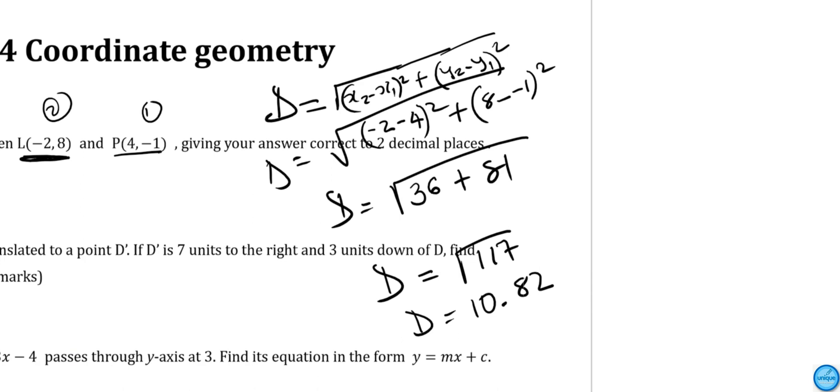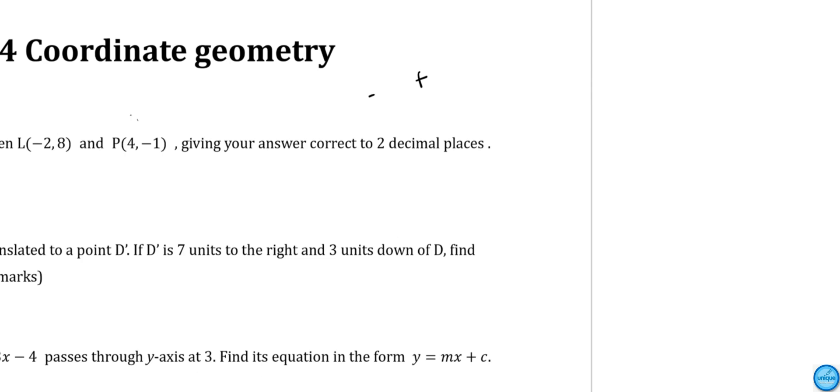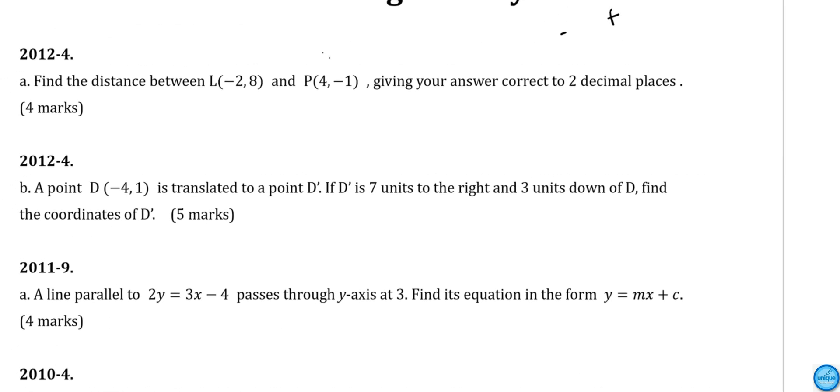The sum of 36 and 81 is 117, and the square root of 117 is approximately 10.82. So the distance is 10.82 units. This was the previous question, this is a translation.